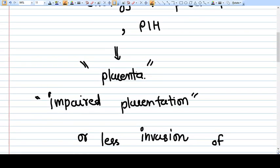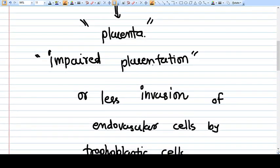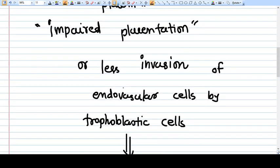It's the placenta which is the culprit. It is the impaired placentation which causes preeclampsia. Less invasion of endovascular cells by trophoblastic cells in spiral arteries of the uterus actually causes preeclampsia. That we know.